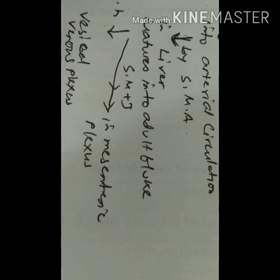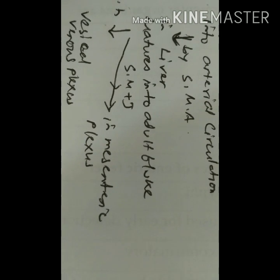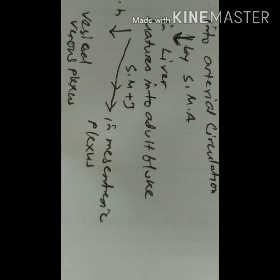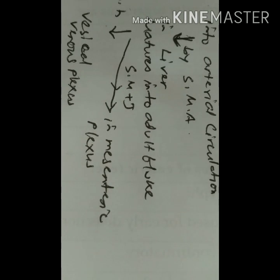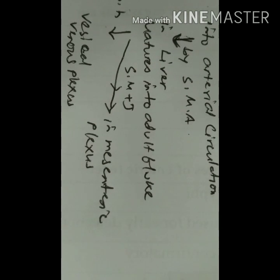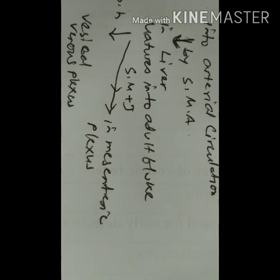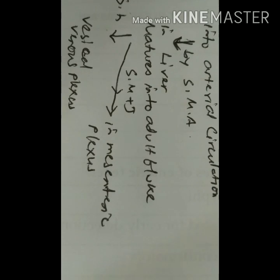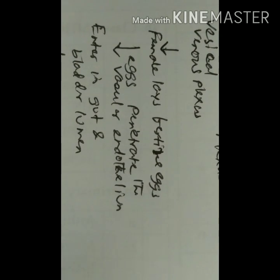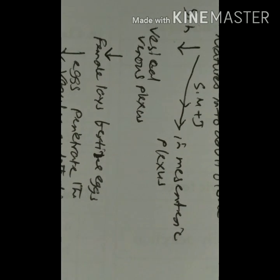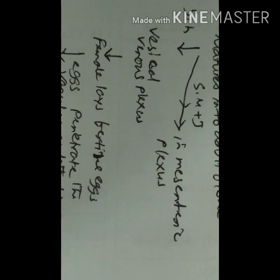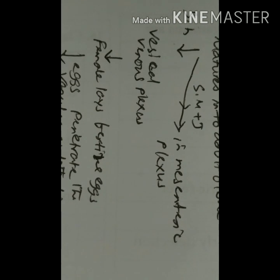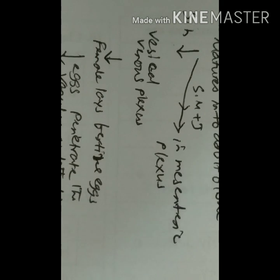The mature adult flukes then migrate into the mesenteric plexus of veins or the vesical plexus of veins. Schistosoma mansoni and Schistosoma japonicum adults migrate against the portal flow to reside in the mesenteric venules. In the case of Schistosoma haematobium, these adults reach the bladder veins through the venous plexus between the rectum and the bladder. These are the definitive venous sites of the adult worms.